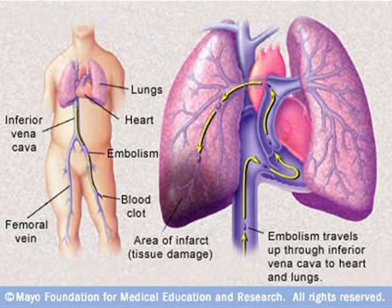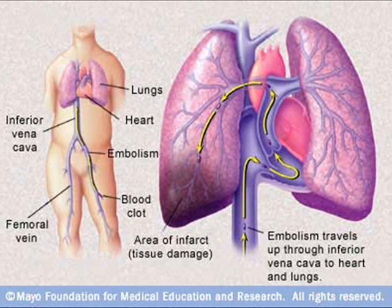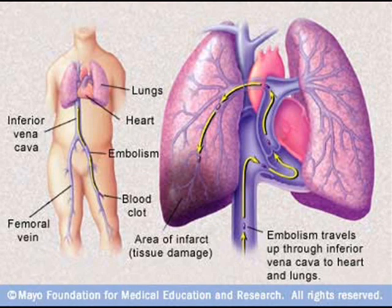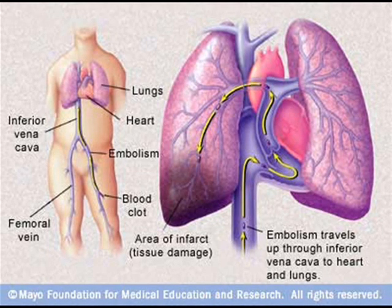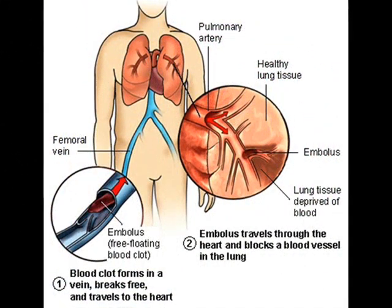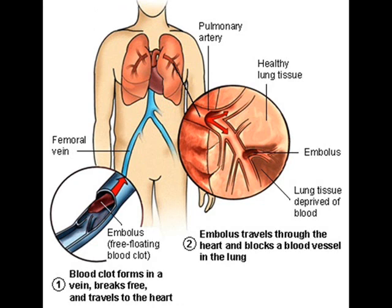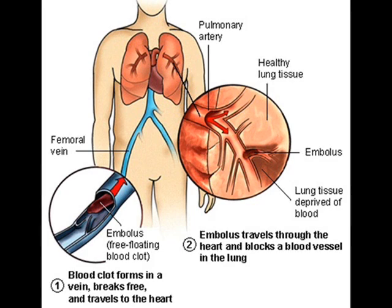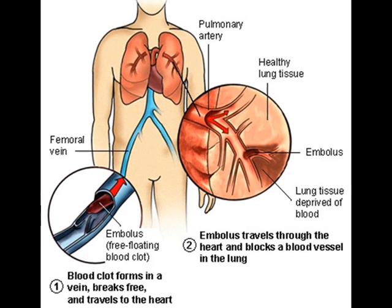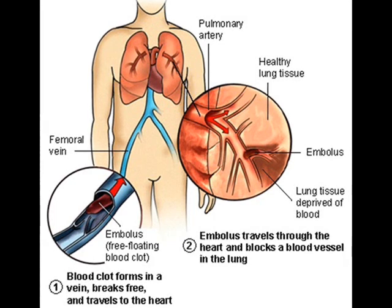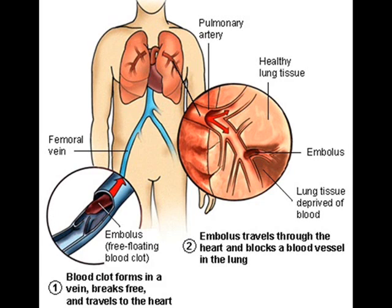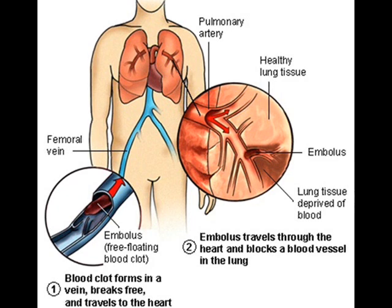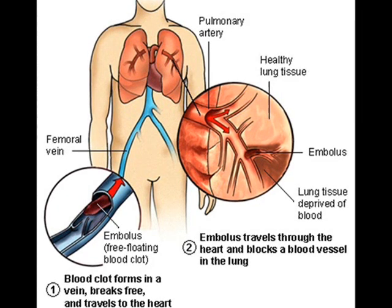The pain is called pleuritic chest pain. In some people, the first symptoms may be lightheadedness, fainting, or convulsions. These symptoms usually result from a sudden decrease in the heart's ability to deliver enough well-oxygenated blood to the brain and other organs. Irregular heartbeats may also occur. People with an occlusion or blockage of one or more large vessels of the lungs may have a blue skin color — cyanosis — and can die suddenly. Pulmonary infarction produces coughing, blood-stained sputum, sharp chest pain when breathing, and fever.